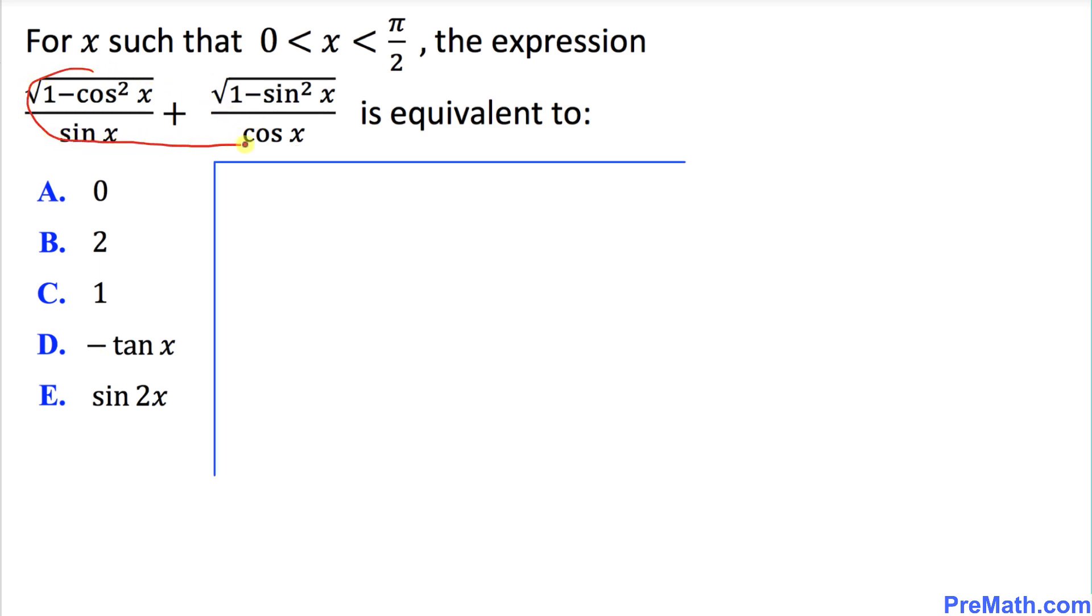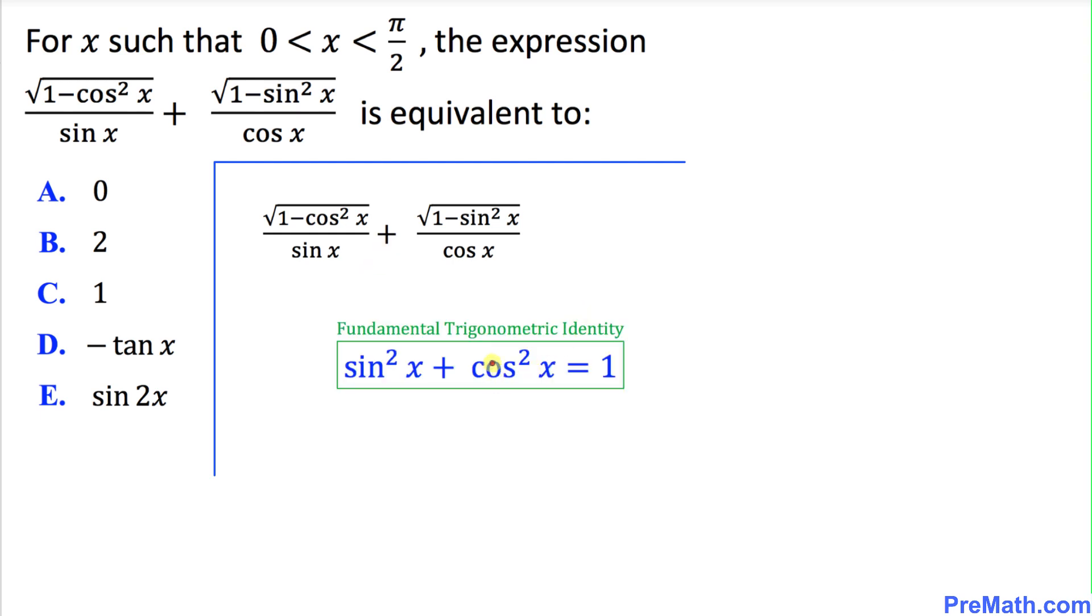Let's focus on this trigonometric expression, and I have copied it down right up here. Let's recall our fundamental trigonometric identity, the backbone in trigonometry: sin²x + cos²x = 1.